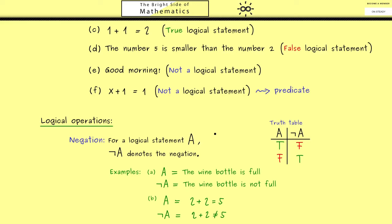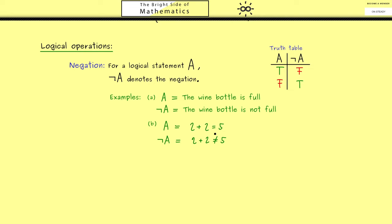Besides the negation, we have another fundamental logical operation which is called the conjunction. It combines two logical statements, let's call them A and B.